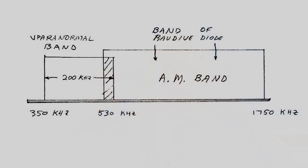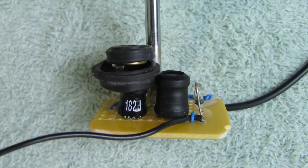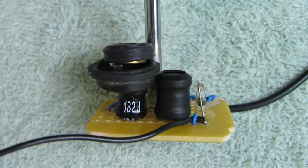The issue I have with that original circuit is that it was tuned right in the middle of the AM band. The AM band in the United States goes from 530 kilohertz to 1750 kilohertz. His was tuned right in the middle of the AM band, so he got a lot of radio stations coming in. When I experimented with that circuit, I did also, even with a small antenna on the input.